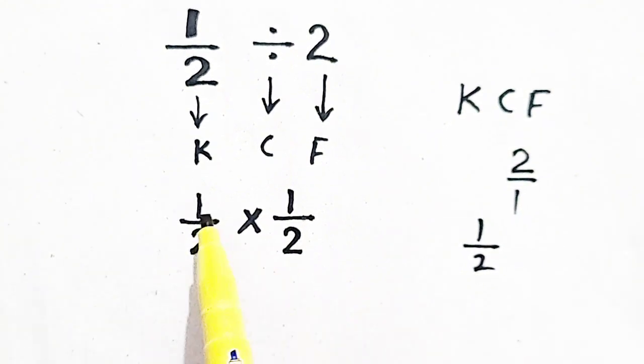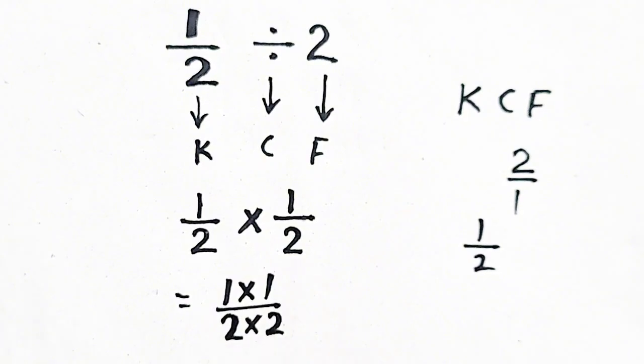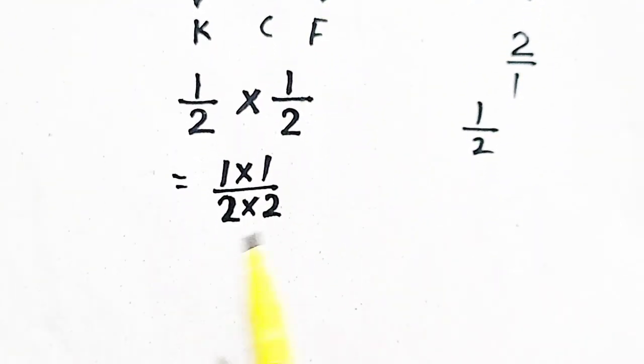Now there is a simple multiplication: 1 times 1 and 2 times 2. When 1 times 1 will be equal to 1, and 2 times 2 will be 4.